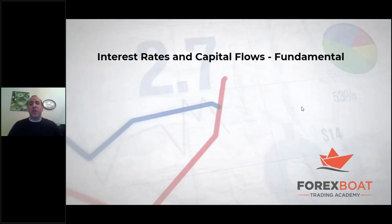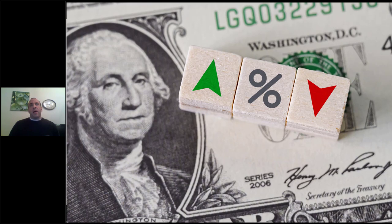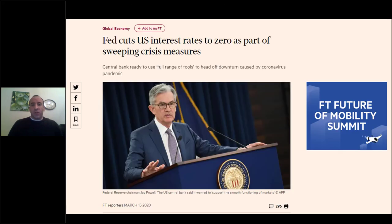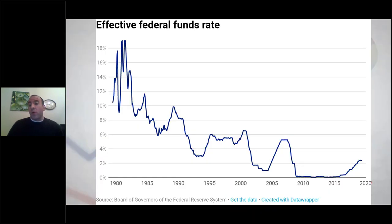Starting with interest rates and capital flows - what are we talking about here? Basically, every major country around the world has a central bank, and based on the health of the economy at any point in time, that central bank can consider engaging in monetary policy. The core form that monetary policy typically takes is the raising or lowering of the target interest rate. For example, recently the Federal Reserve Bank in the US actively engaged in cutting interest rates in early 2020, not very long after raising interest rates in 2019.